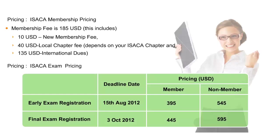A candidate can opt to register for the CISA exam as a member of ISACA or as a non-member. Early bird registration is cheaper by US$50, while registering as a member is again cheaper by US$50, as shown in the table in the slide. ISACA membership is priced at $185 as per the breakdown shown. The local chapter dues, which make part of the membership fees, may vary depending on the local chapter you register under, based in a particular physical location or city.